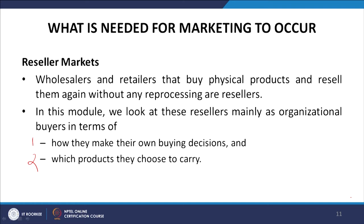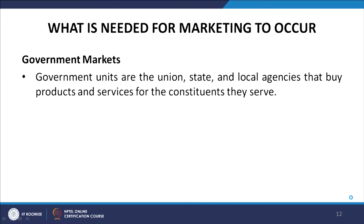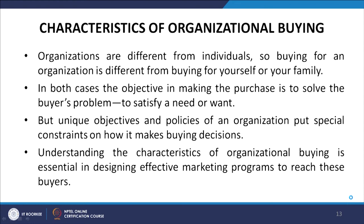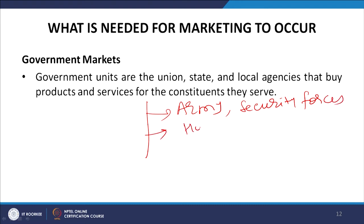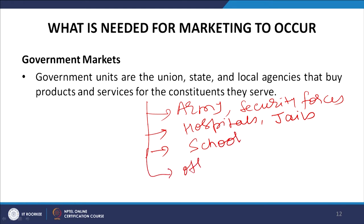In this module we look at resellers mainly as organizational buyers in terms of how they make their buying decisions and which products they choose to carry. Government units are the union, state and local agencies that buy products and services for the constituents they serve — for example, for the army, security forces, hospitals, jails, schools and other government departments.